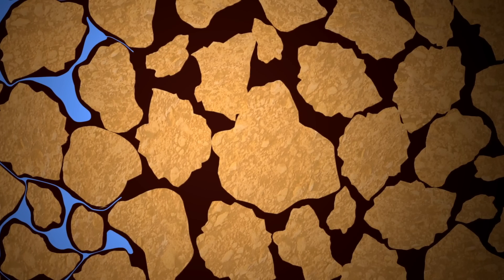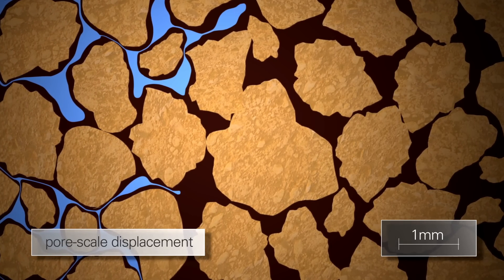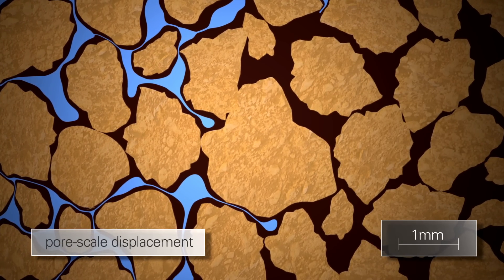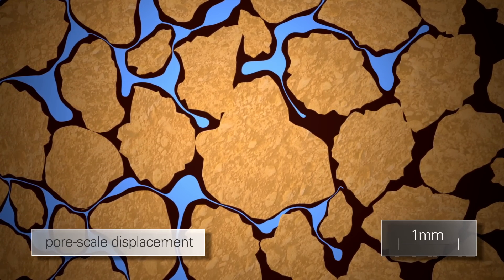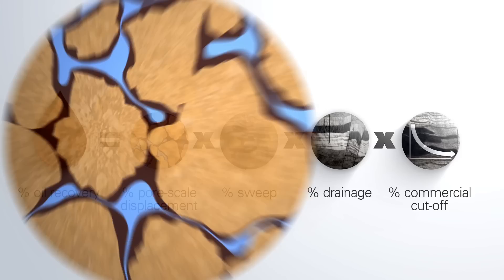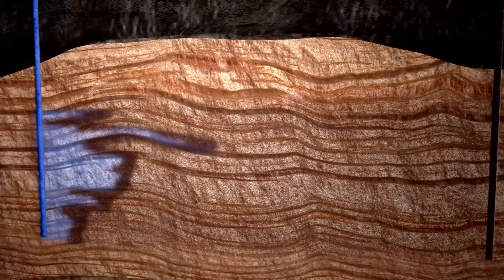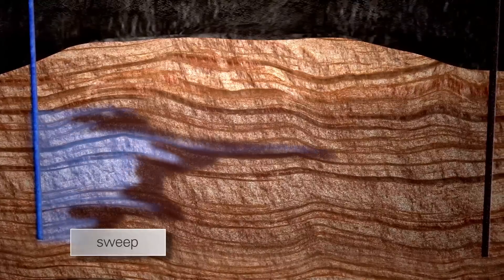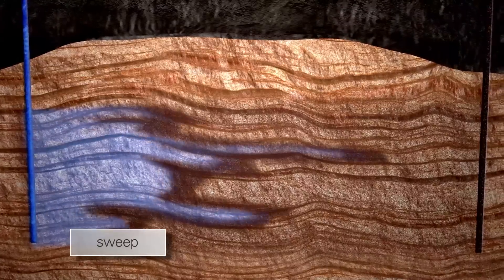Pore scale displacement is a measure of how much of the oil has been pushed out from any of the rock accessed by injected fluids. And sweep calculates how much reservoir rock has been reached by injected fluids.